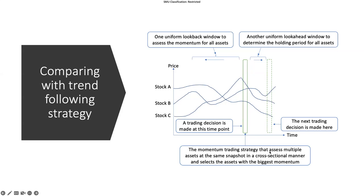The momentum training strategy assesses multiple assets at the same time point — the same snapshot — in a cross-sectional manner. We are comparing vertically across multiple assets and selecting the assets with the biggest momentum. For example, SIA has the biggest momentum, so we go long on SIA if it is increasing in price.